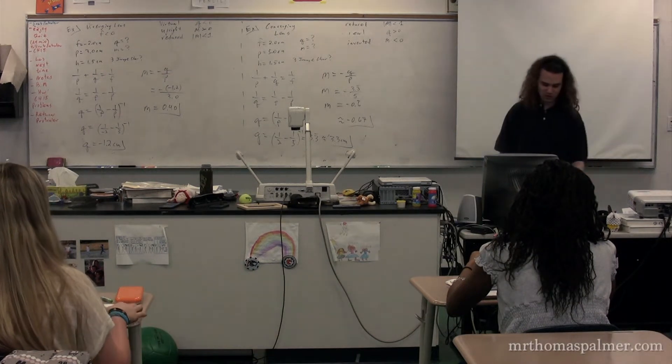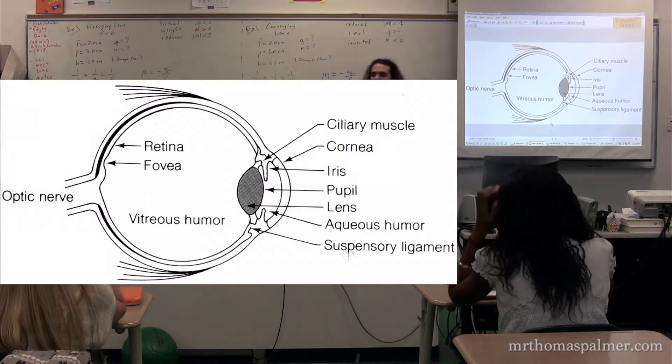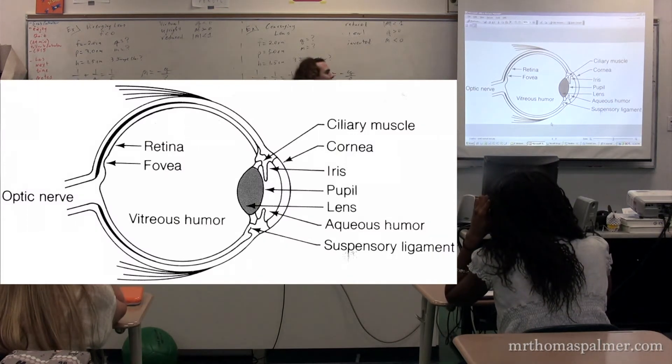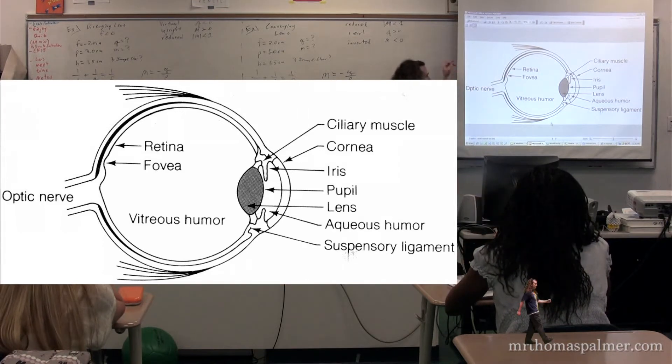We were just talking about the eye, so let's talk some more about the eye. This is a diagram of your eyeball. Your eyeball, you have an optic nerve which translates all the information from your eyeball to your brain. Your brain interprets it.